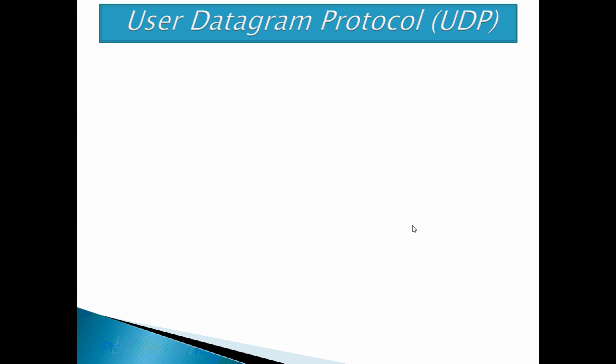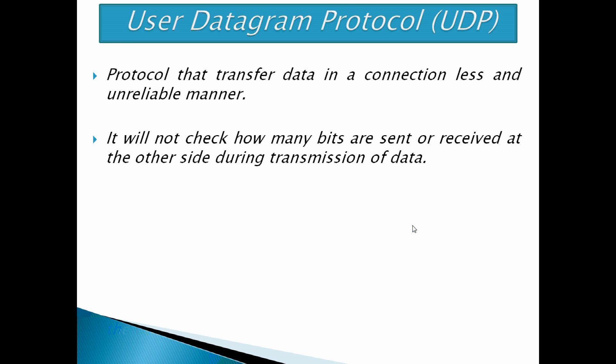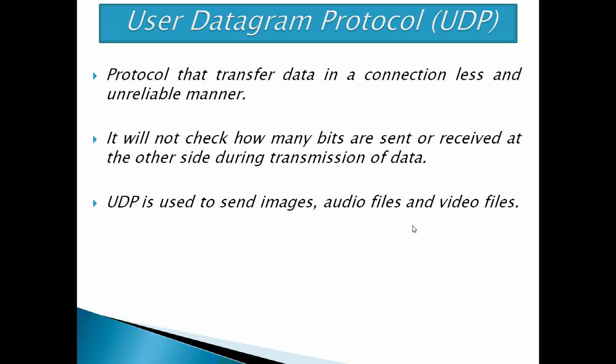Next is User Datagram Protocol. UDP is another protocol that transfers data in a connectionless and unreliable manner. It will not check how many bits are sent or how many bits are actually received at the other side during transmission. There may be a loss of some bits; hence UDP is used to send images, audio files, and video files. Even if some bits are lost, the image or audio file can still be composed with only a slight variation that will not disturb the original.